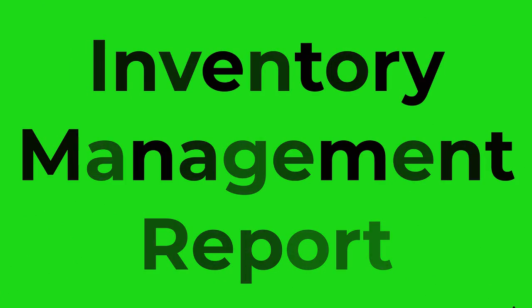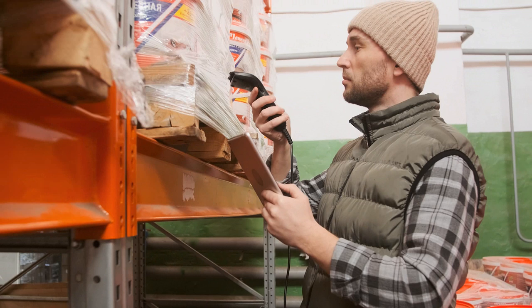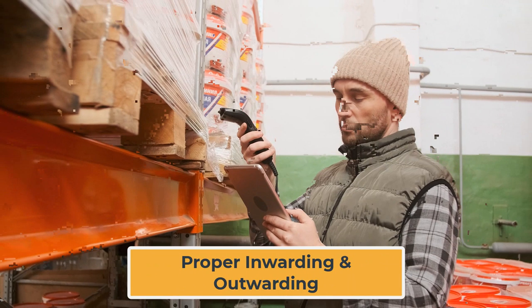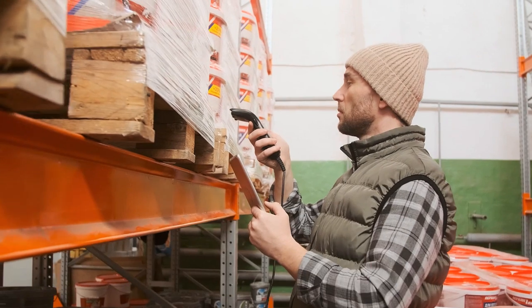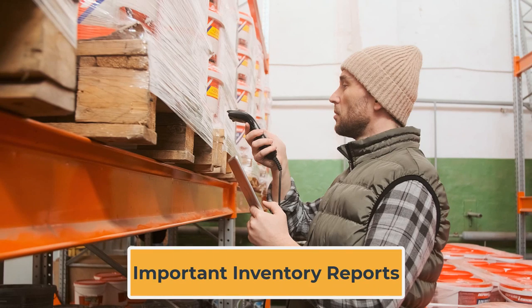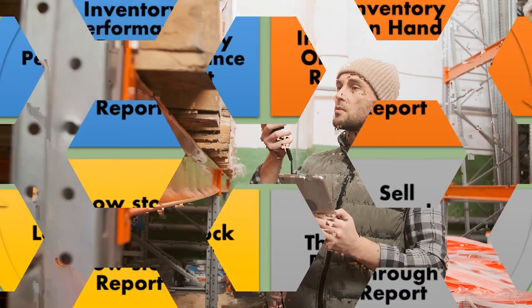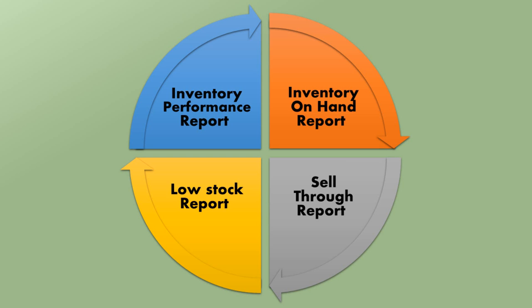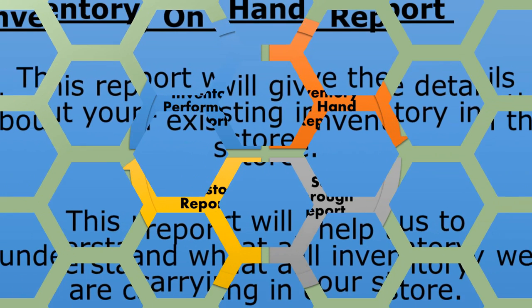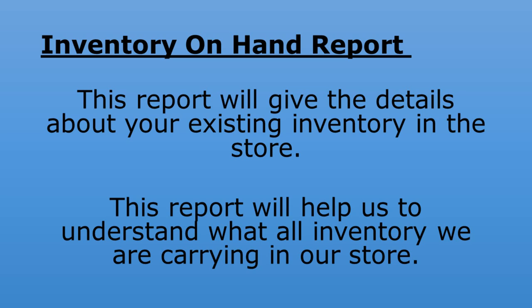The eighth category is inventory management reports. Inventory management involves proper maintenance of stock — inward and outward movements as per SOP — and maintaining overall healthy inventory. The important inventory reports include the inventory on-hand report, sell-through report, low stock report, and inventory performance report. The inventory on-hand report gives details about existing inventory in the store, helping us understand what inventory we are currently carrying.